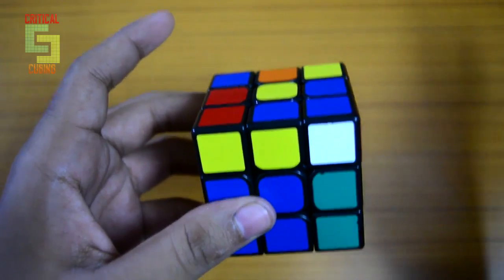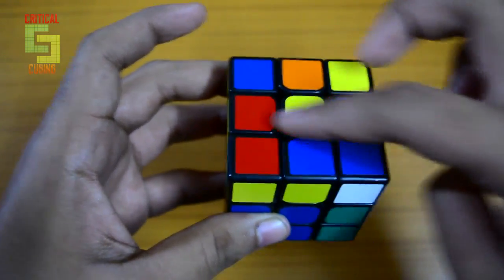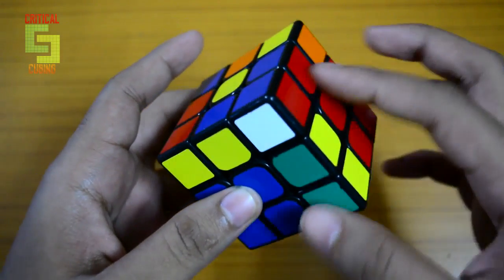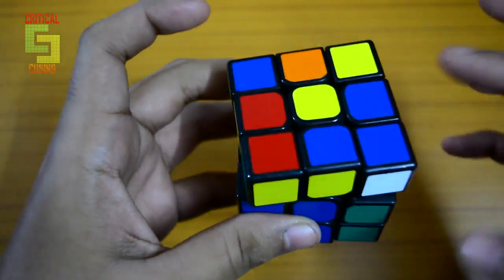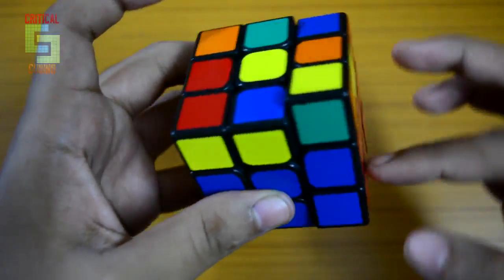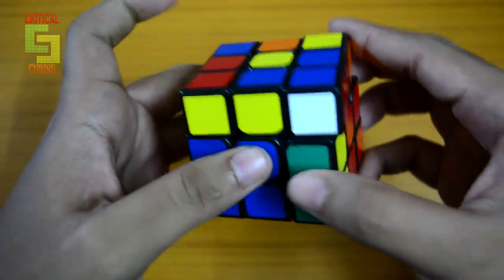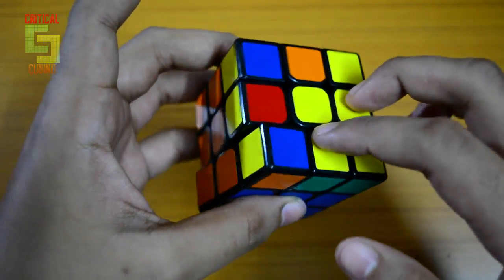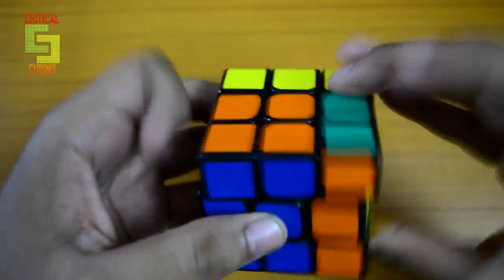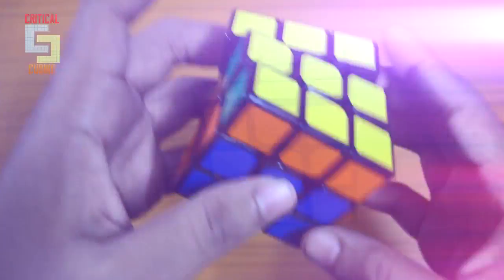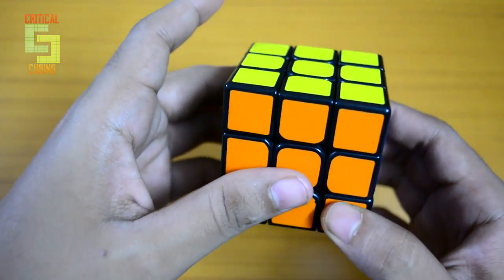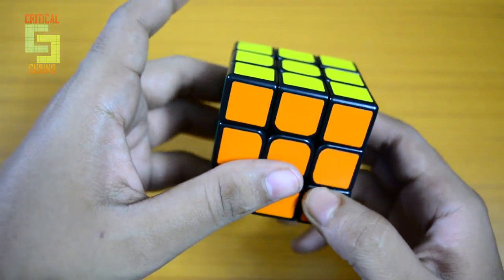Before I end this video, I want to give a quick tip on how you can avoid dot cases. When you're inserting your last F2L pair, instead of inserting it normally like this which will give you a dot case, you can insert this F2L pair with a sledgehammer to orient two edges, which will give you a much better case than a dot case. That's it for this video, guys. Thank you for watching, and I'll see you tomorrow. Take care and bye.